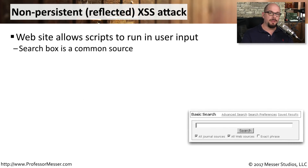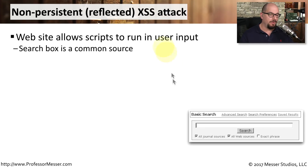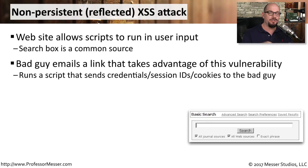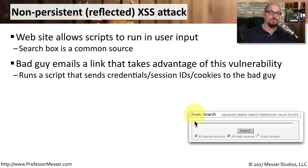One type of cross-site scripting vulnerability is a non-persistent cross-site scripting attack, also referred to as a reflected attack. Take, for example, a web search screen where you can input information and search for things. But what if you could also put a script into that input box? The script would perform a function — maybe it took information about a session ID, a user's credentials, or cookie information, and sent those through an email to the attacker. All because you simply ran a search into a normal search box.